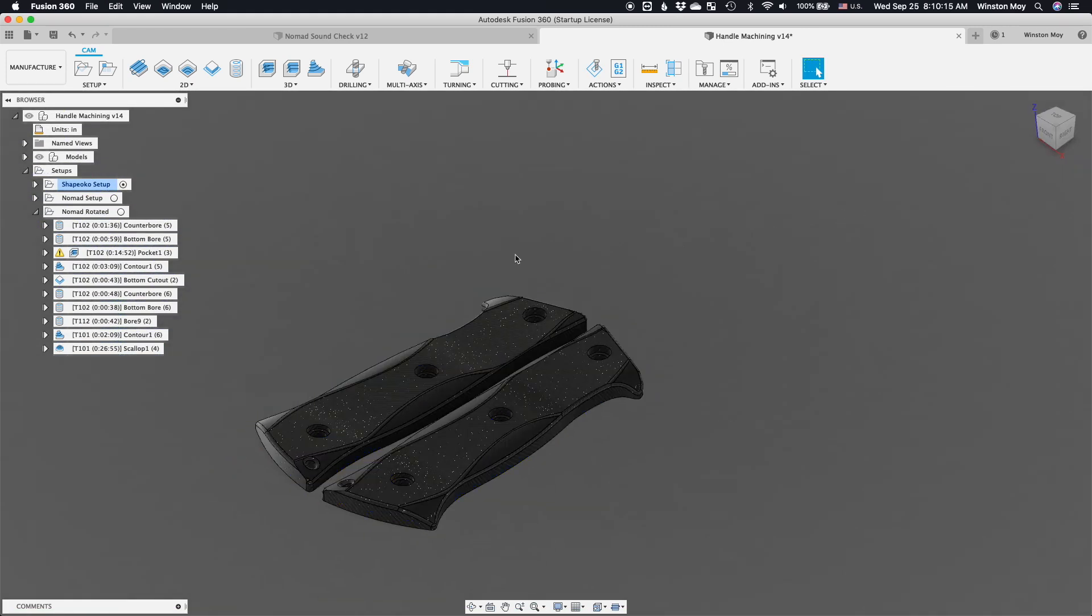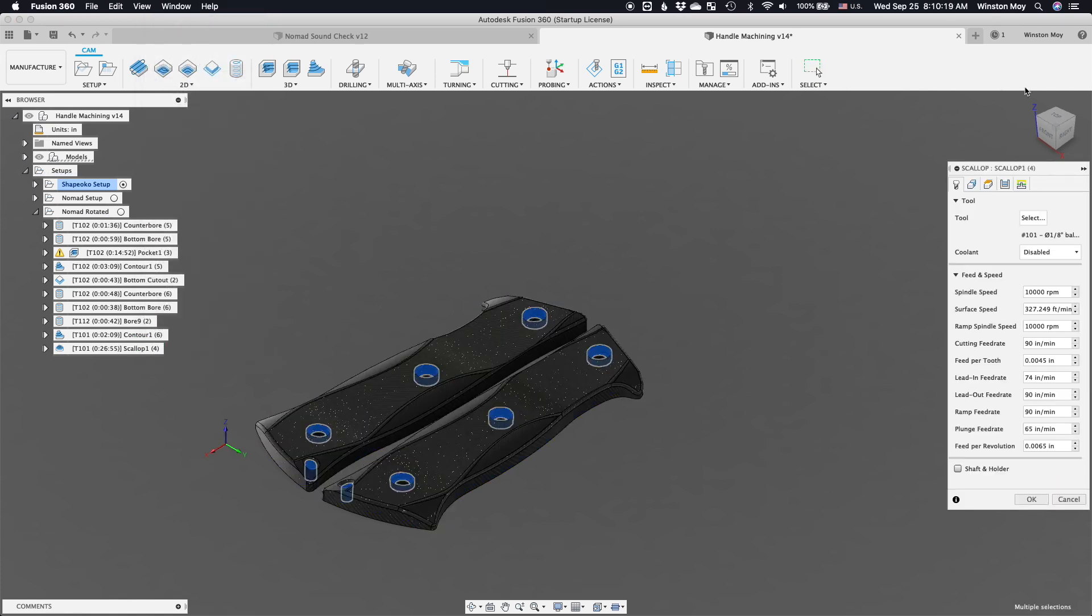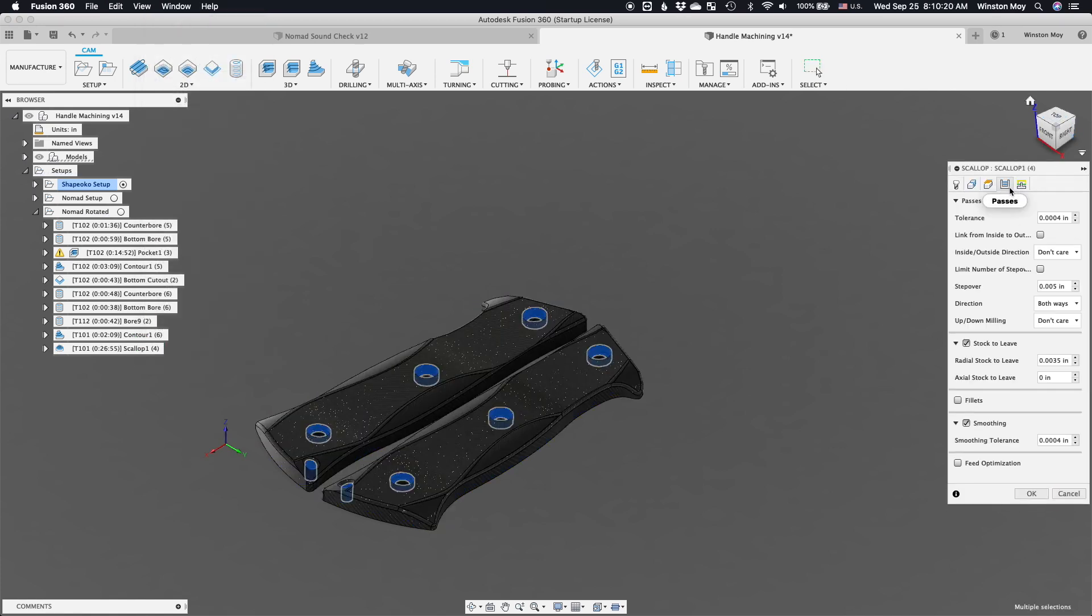Because G10 is easier to sand than steel, if anything was going to sit proud, I wanted it to be the G10. That stock to leave was my insurance policy. Now that we have the CAM stuff all squared away, it's CNC time.